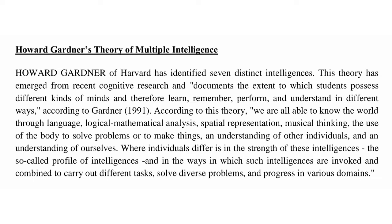According to this theory, we are all able to know the world through language, logical-mathematical analysis, spatial representation, musical thinking, the use of the body to solve problems or to make things, an understanding of other individuals, and an understanding of ourselves. Where individuals differ is in the strength of these intelligences — the so-called profile of intelligences — and in the ways in which such intelligences are invoked and combined to carry out different tasks, solve diverse problems, and progress in various domains.